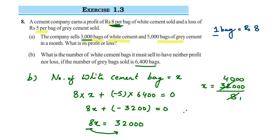Therefore, the total number of white cement bags required is 4,000. Number of white cement bags equals 4,000. I hope this question is clear. In case you have further questions or doubts, you can drop a comment. Thank you so much for watching.